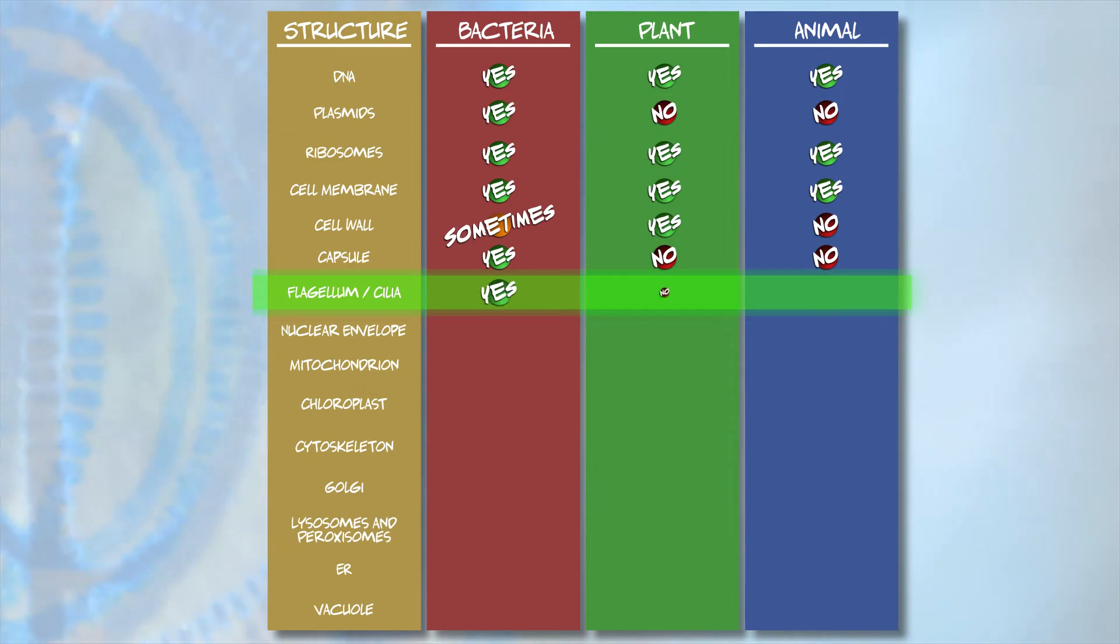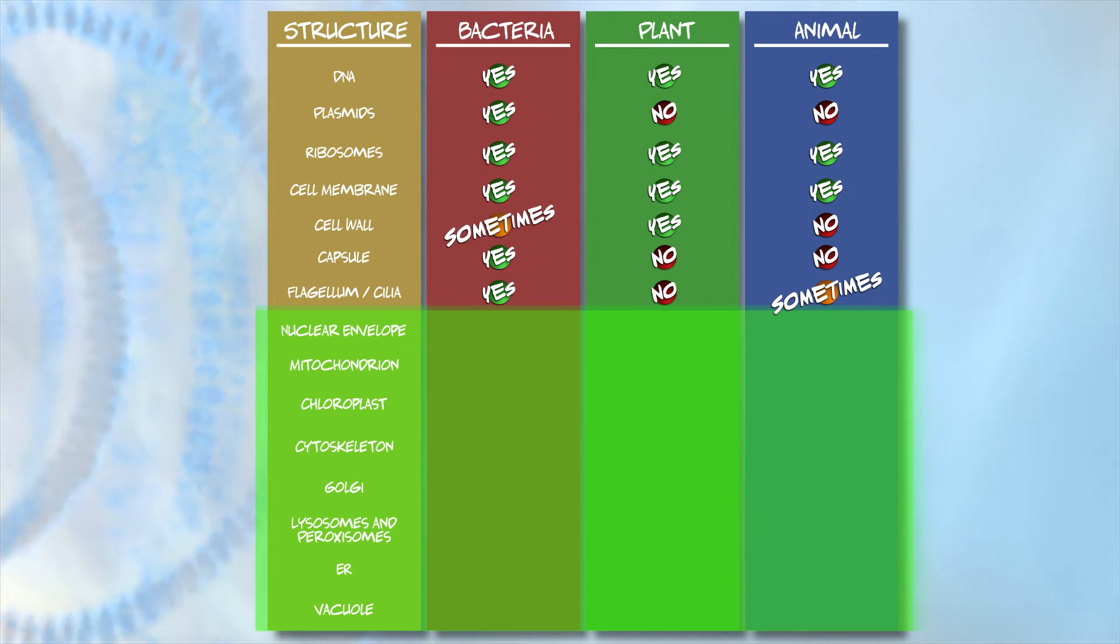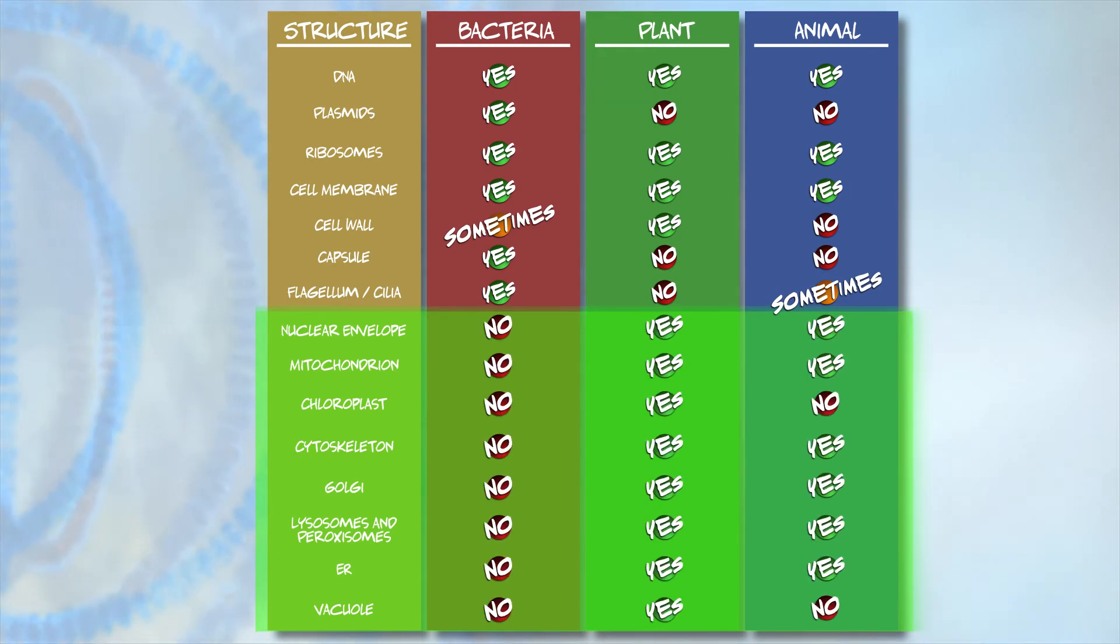In the category of mobility, bacteria cells are typically mobile, thanks to flagella and cilia. Certain types of eukaryotic cells do need to be mobile, such as sperm, and would have a flagellum. In eukaryotes, cilia can be used to move stuff around the organism, such as mucus. In the category of organelles, bacteria have no nuclear envelope and no membrane-bound organelles.